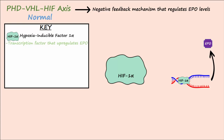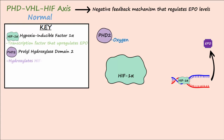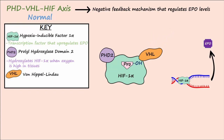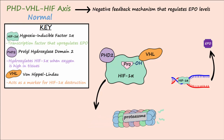In cells that are well oxygenated, prolyl hydroxylase domain 2 (PHD2) uses oxygen to hydroxylate a proline residue on HIF-1-alpha. This hydroxylation allows von Hippel-Lindau (VHL) to attach to HIF-1-alpha. The attached VHL acts as a marker for destruction of HIF-1-alpha by a proteasome. When HIF-1-alpha is hydroxylated, it is targeted for destruction; when it is not hydroxylated due to low oxygen levels, HIF-1-alpha persists longer and upregulates EPO production.